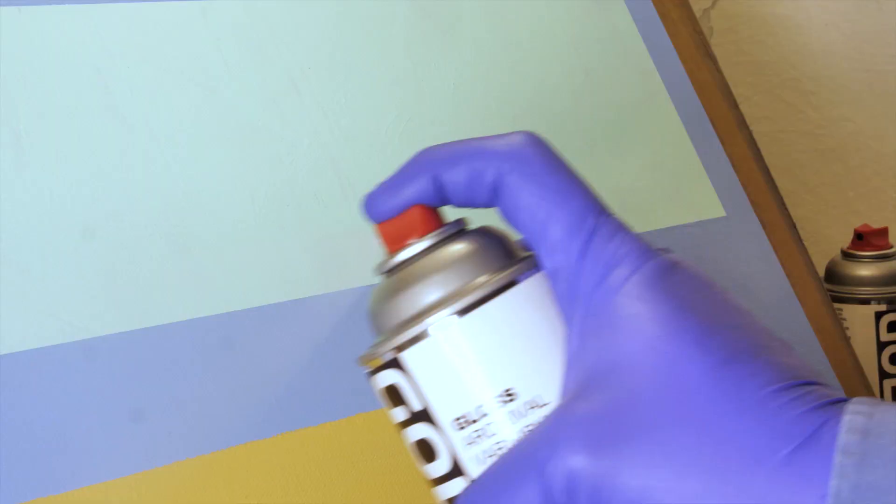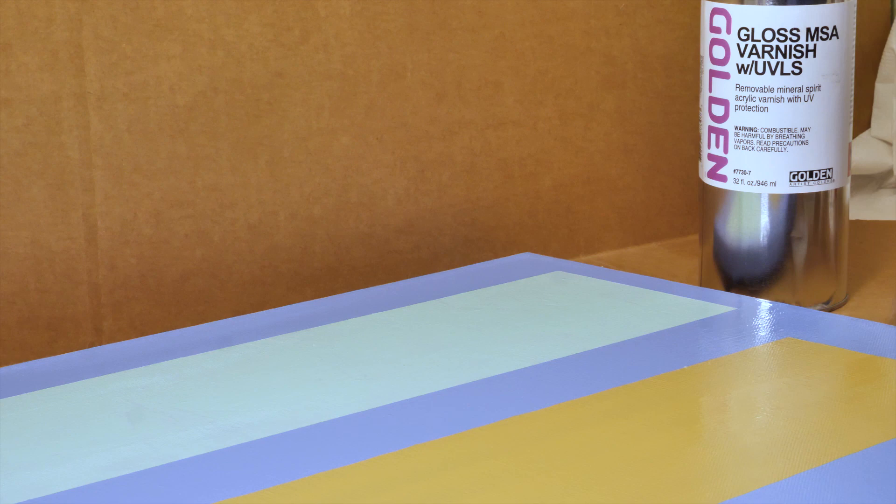Isolation coats are for acrylic paintings only and not to be used on oil paintings, watercolors, or any water-soluble media. An isolation coat makes application and removal of varnish easier by reducing the differences in surface absorbency and texture in acrylic colors, mediums, and grounds.